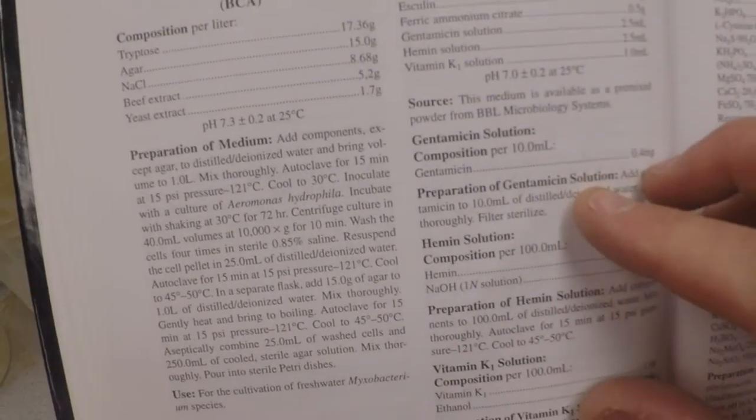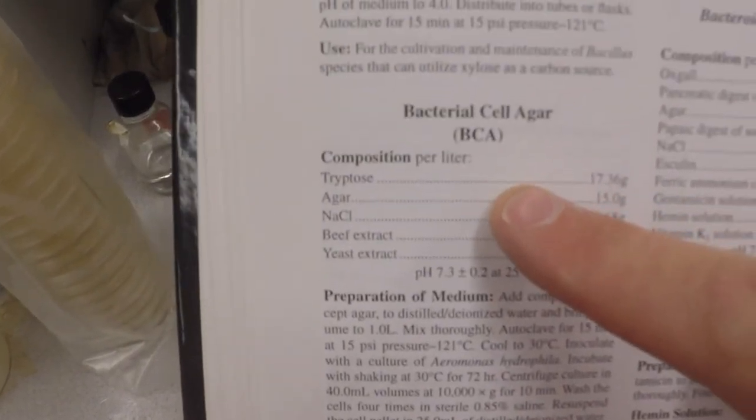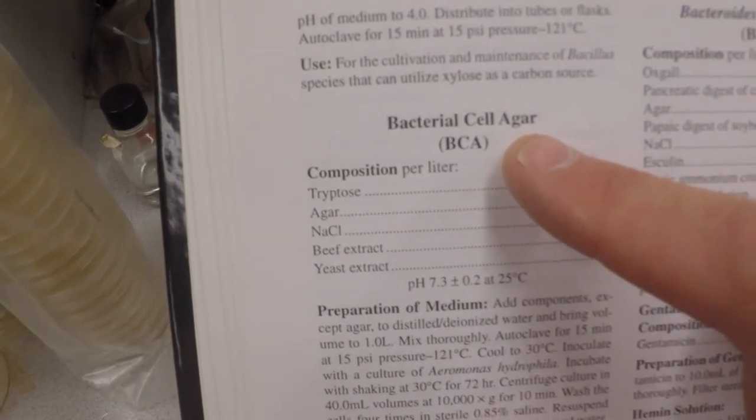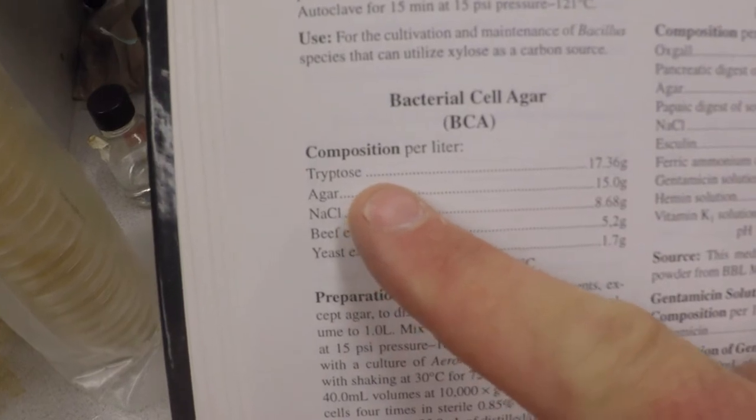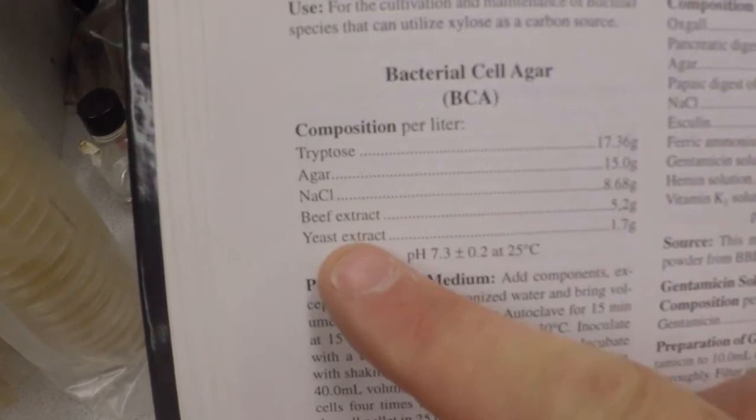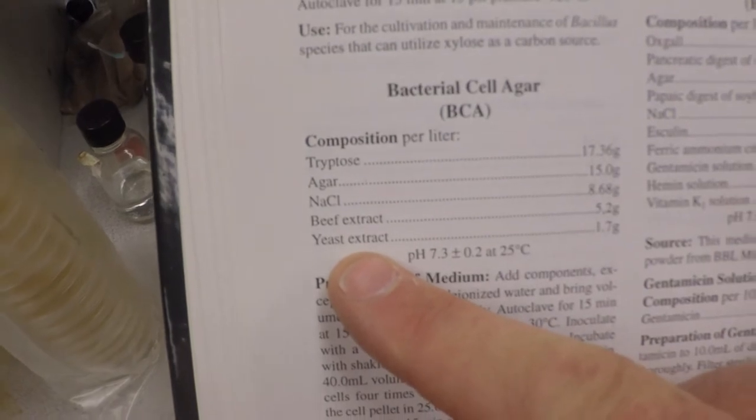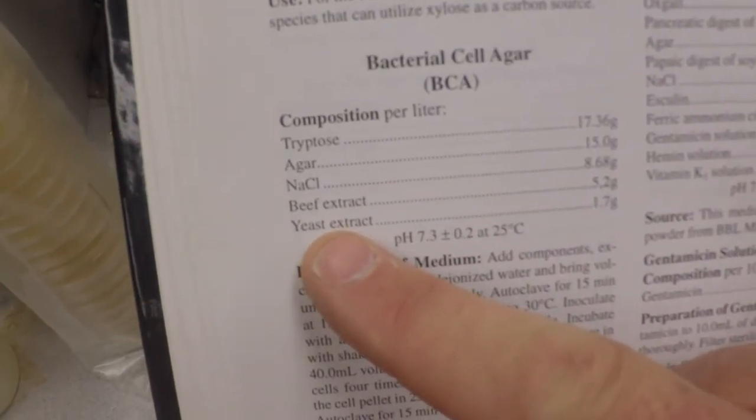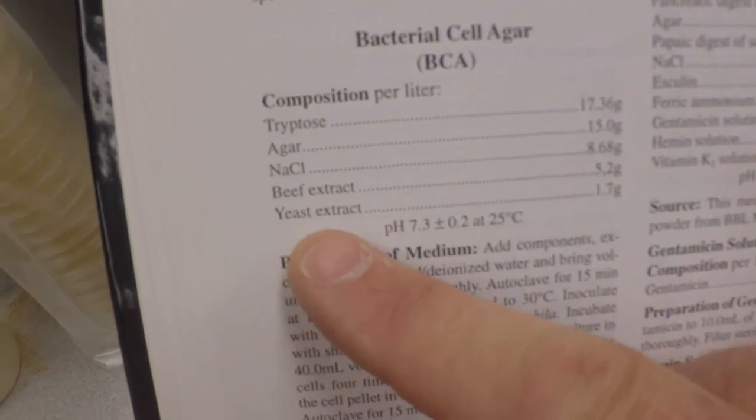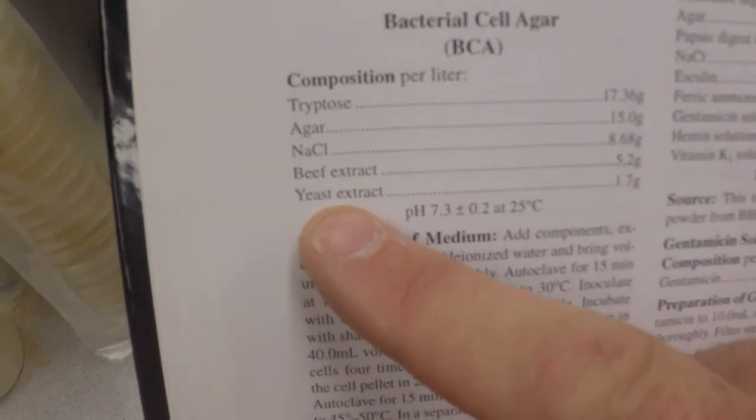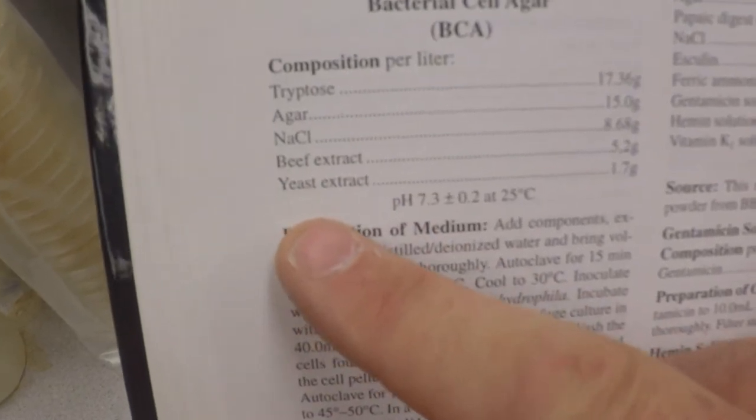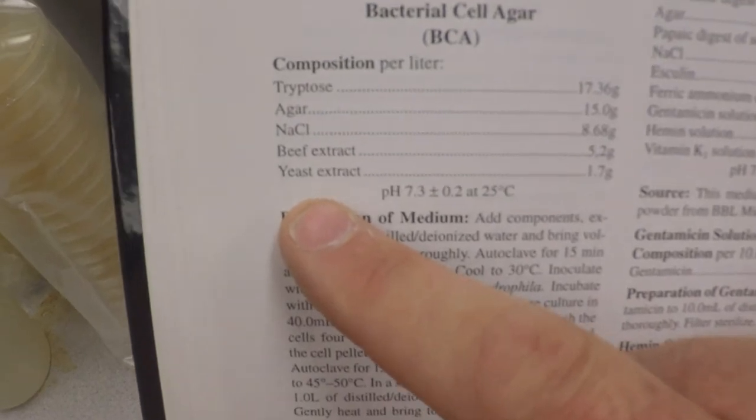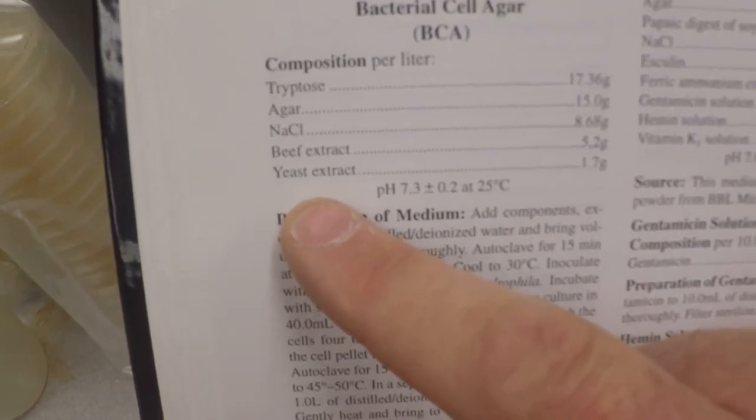This stuff here is called bacterial cell agar. You look at what the composition is: it says tryptose, sodium chloride, beef extract, and yeast extract. What that means is literally yeast extract is like the stuff you buy at the store—bits and pieces of proteolytic digestive yeast, same with the beef extract. You don't know what the heck is in those. There's different concentrations of all kinds of things in there. That's why this is called a complex medium.